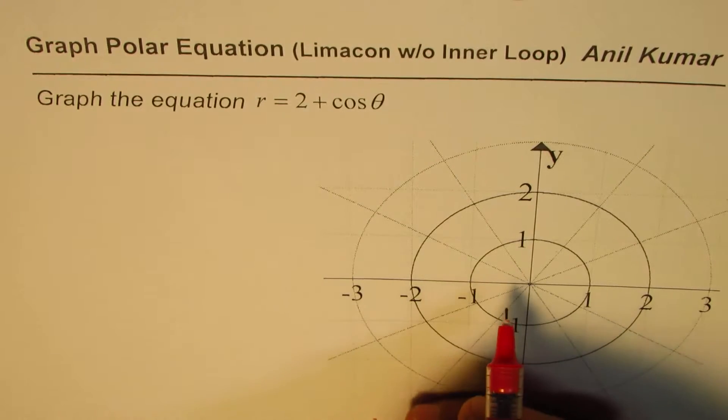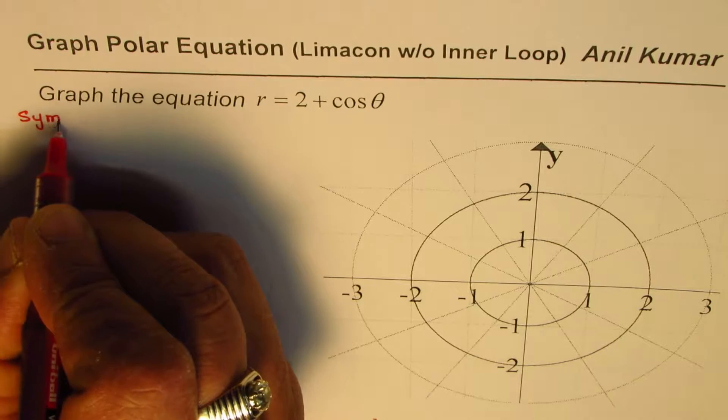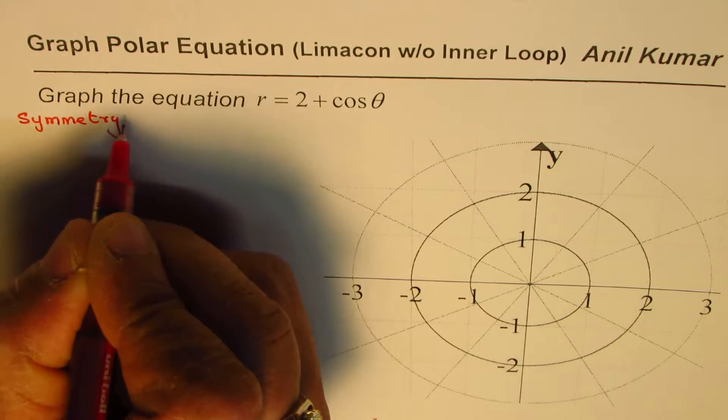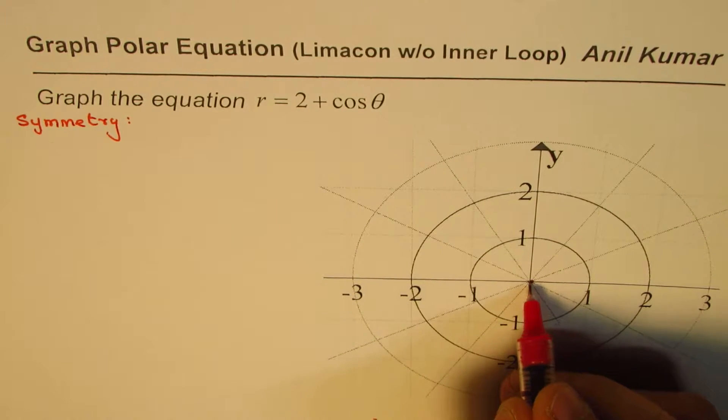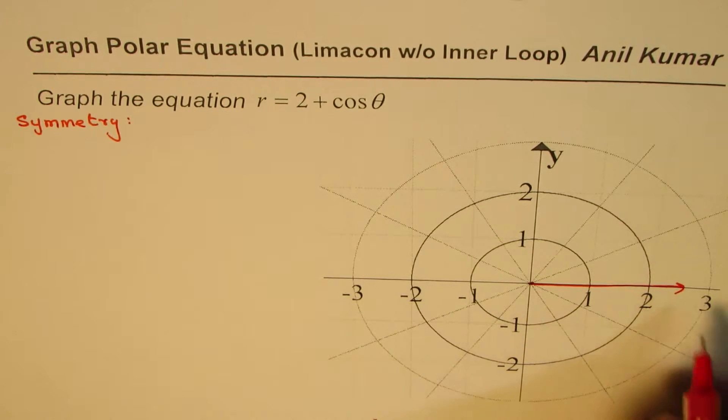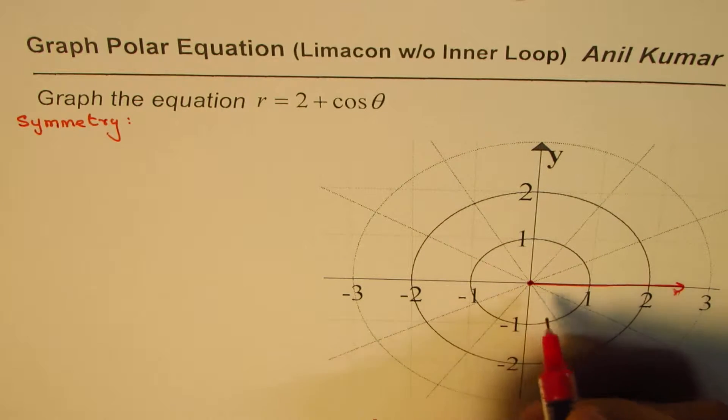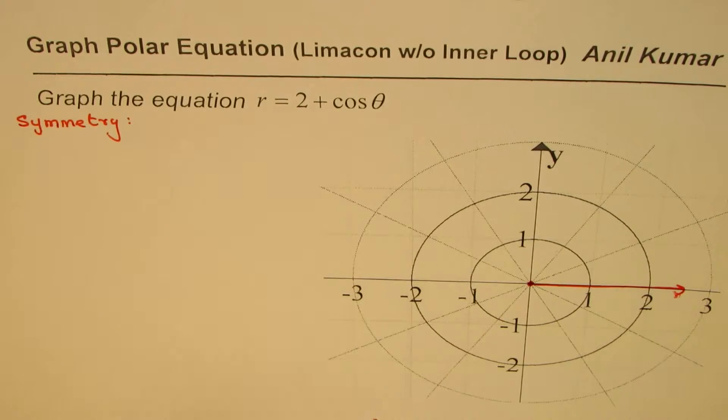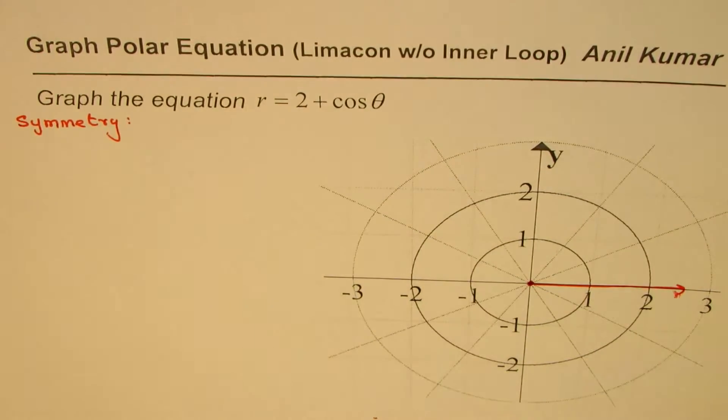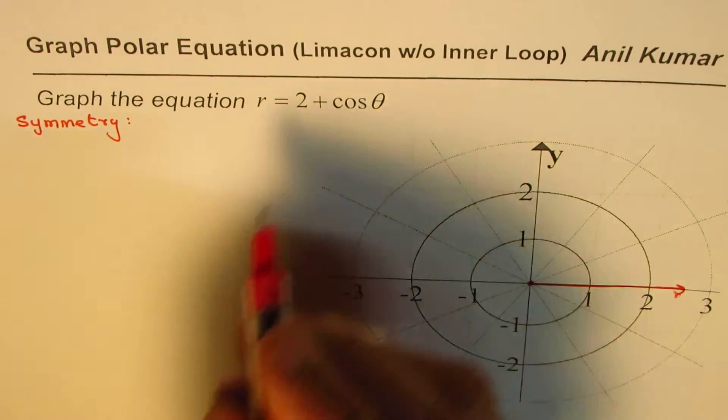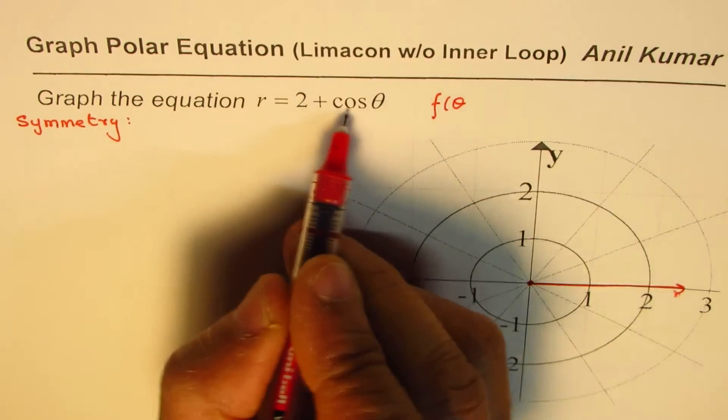Now to begin with we should look into symmetry. As you know, polar graphs could have three types of symmetry. They could be symmetric about the polar axis, they could be symmetric about the y-axis, or they could be symmetric about the pole itself. Now when we have this function r equals 2 plus cosine theta.